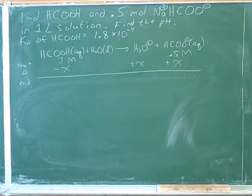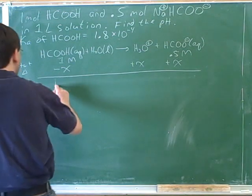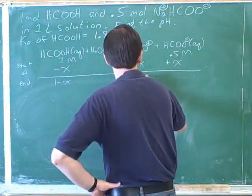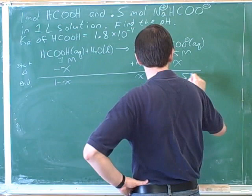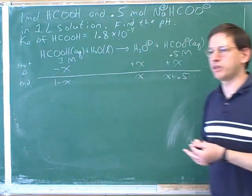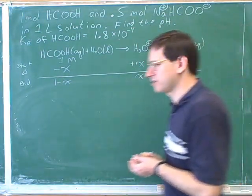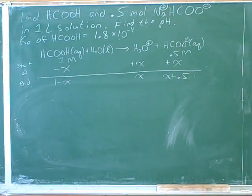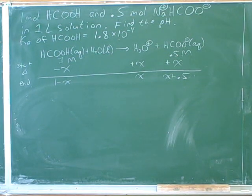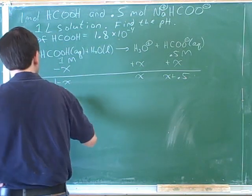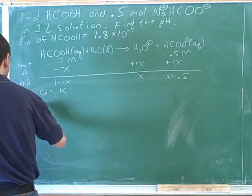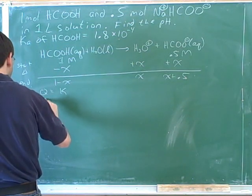This gives us 1 minus x, x, and x plus 0.5. Now the Ka expression: 1.8 times 10 to the negative 4 equals 0.5 times x over 1.